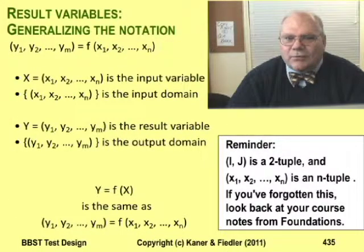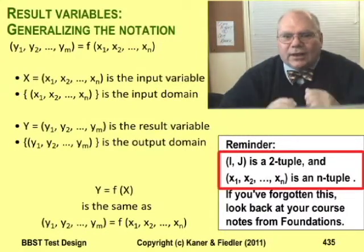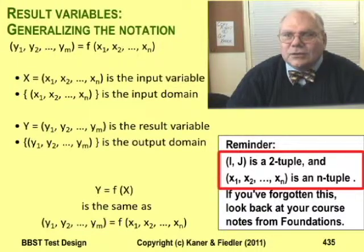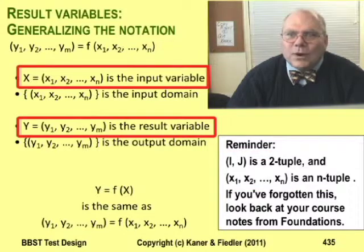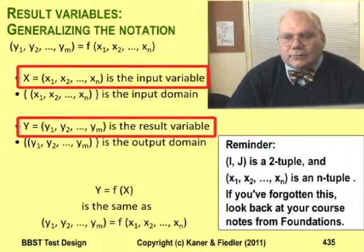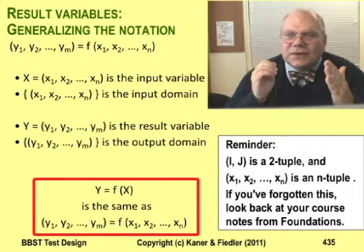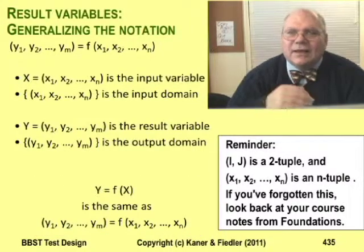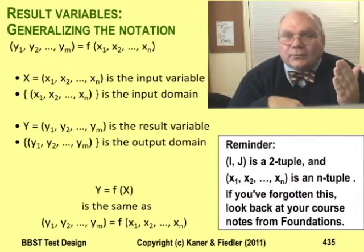Let me generalize how I describe result variables. A notation like (i,j) shows a pair of values, also called a 2-tuple. More generally, (x1, x2, ... , xn) shows a combination of n values, called an n-tuple. Mathematicians often call this simply x — often a capital X — and everyone understands it may be an n-dimensional variable. So when you see y = f(x), understand that x and y might each have one dimension or more than one, and x might not have the same number of dimensions as y. In any case, x is the input variable and y is the output variable, also called the result variable.